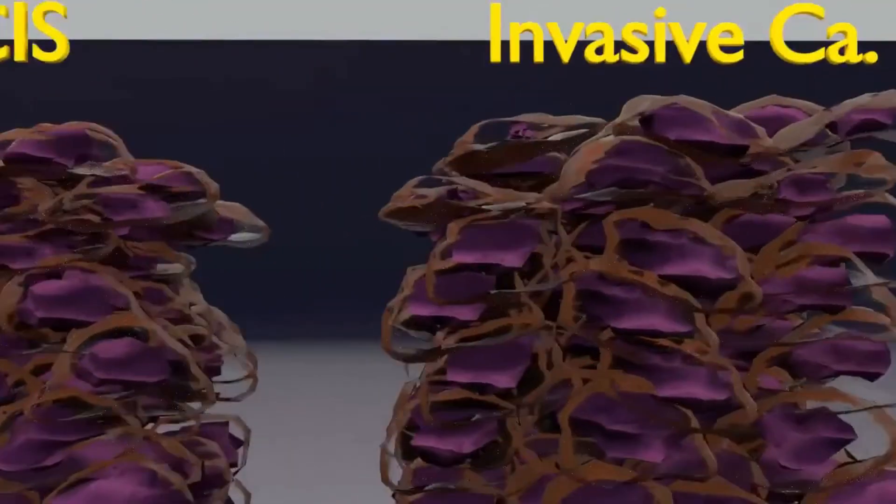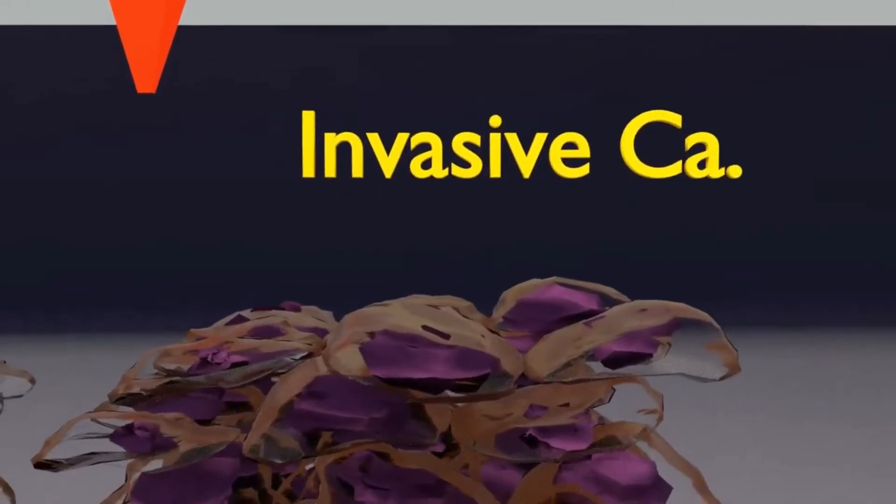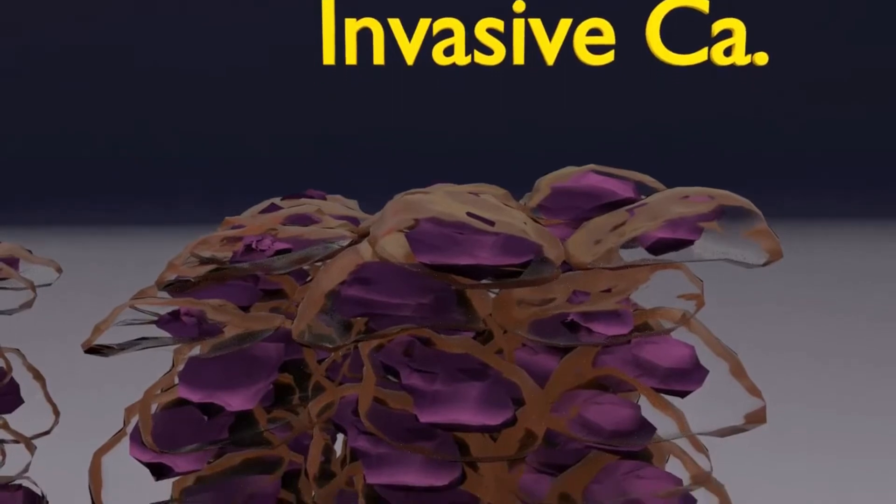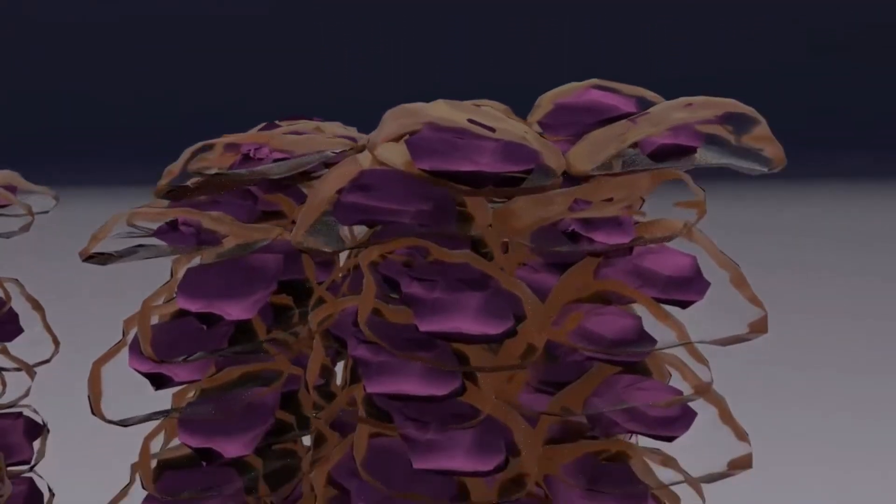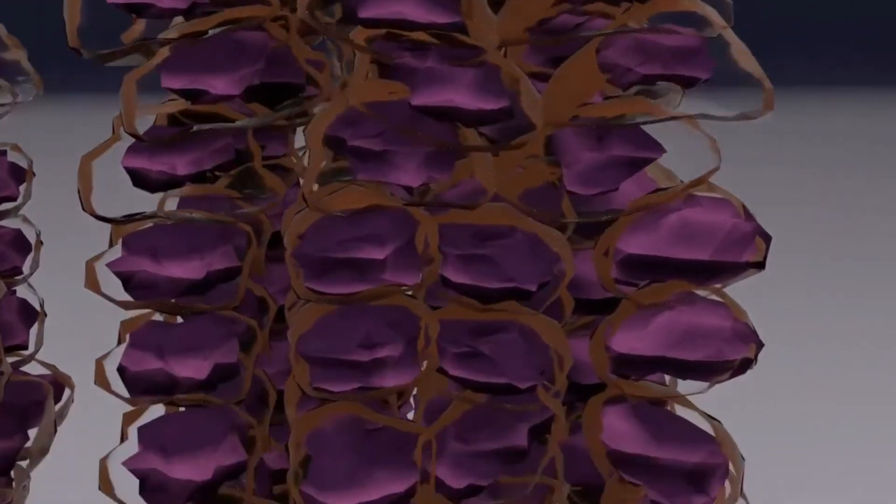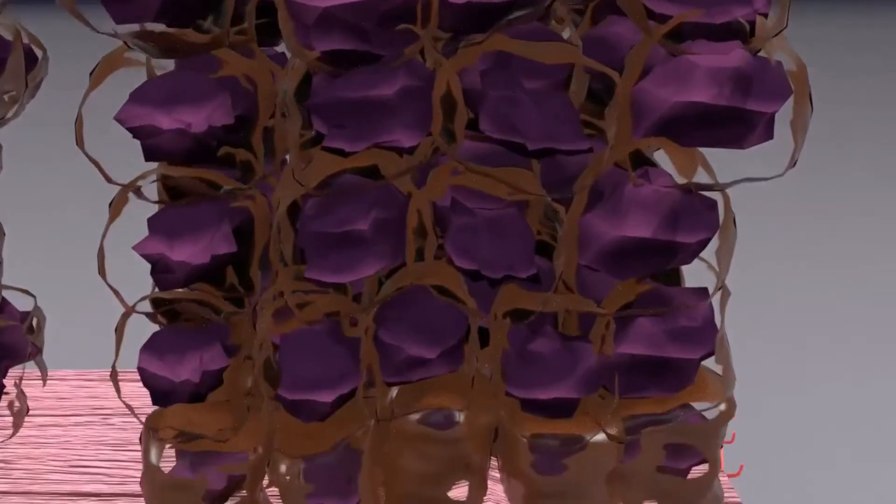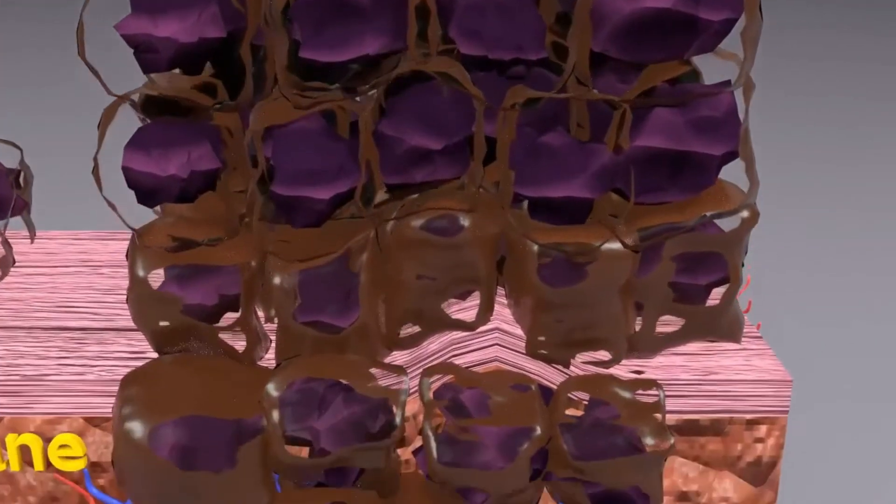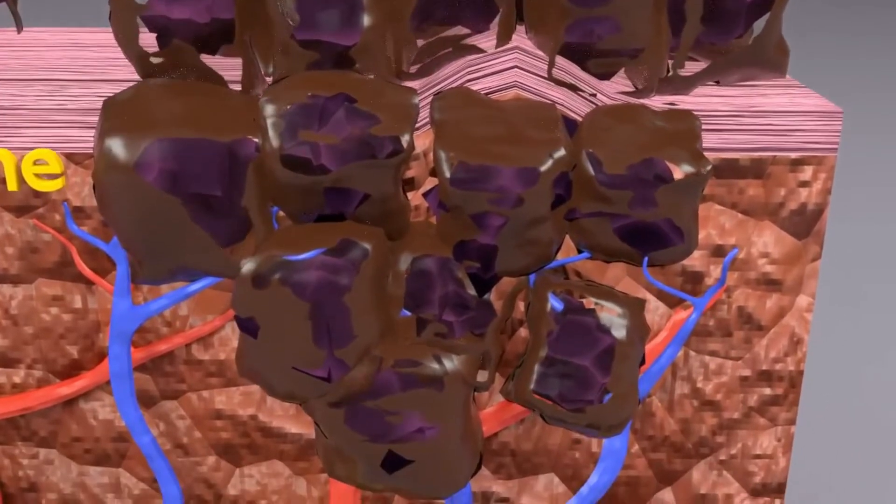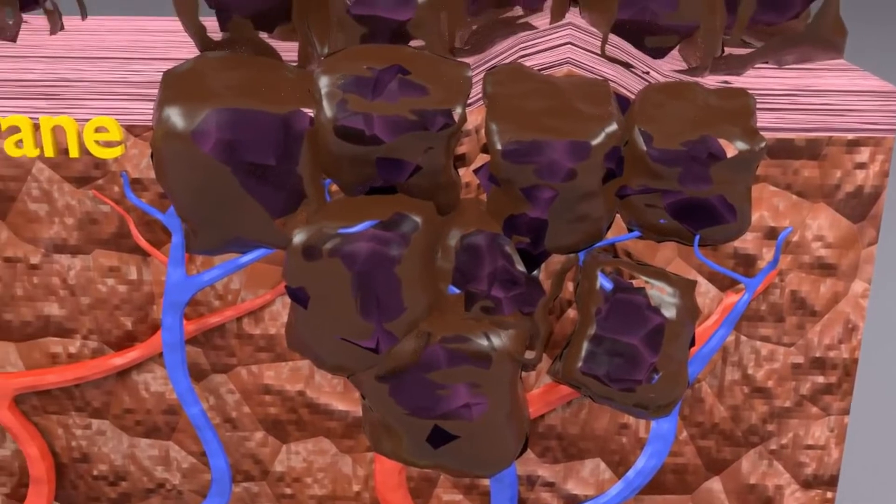Now let's move further talking about the most severe neoplastic change seen in cervical epithelium, i.e. the invasive carcinoma or cancer. The invasive carcinoma tumor cells breach the basement membrane and invade the deeper stroma and blood vessels, and the nuclear and cytoplasmic changes are of markedly severe degree in all the layers as compared to the previous stages.